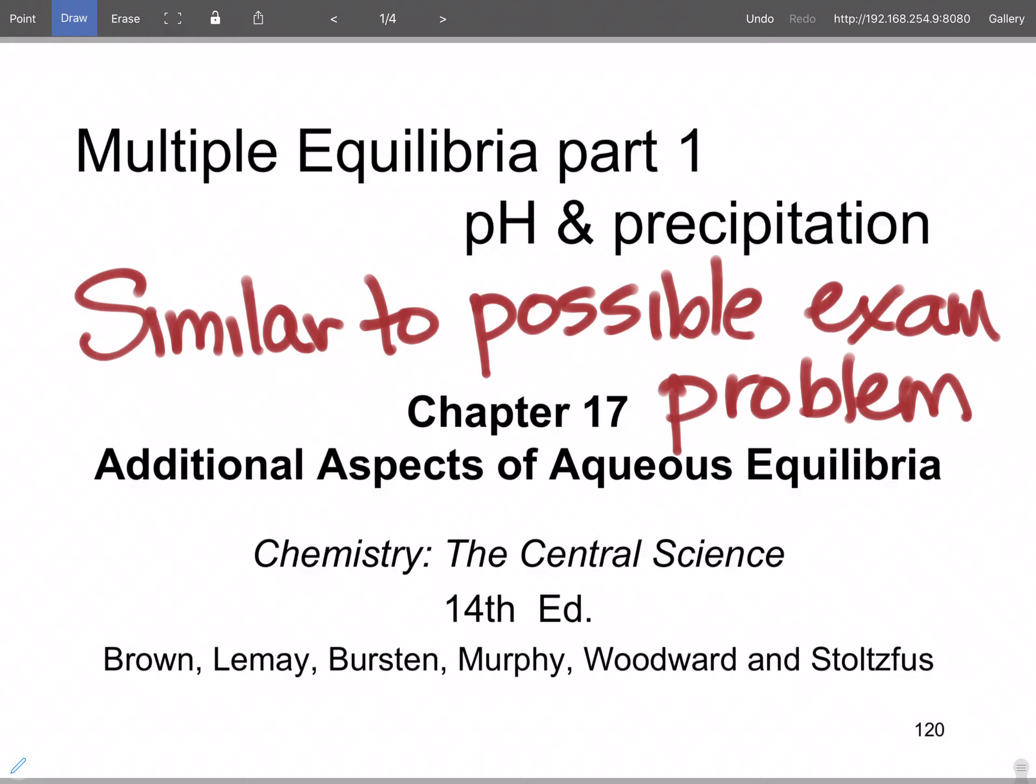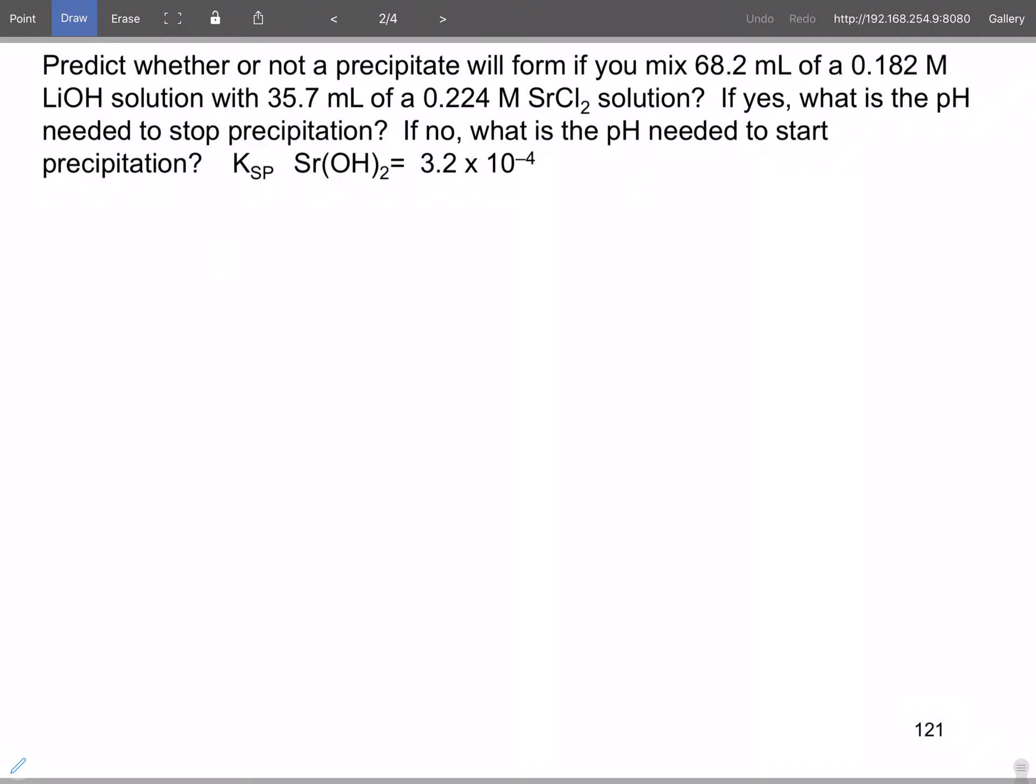Problem that we're going to work in this chapter, and this is the multiple equilibria with the pH. This is similar to what will appear on the exam. Predict whether or not a precipitate will form if you mix lithium hydroxide with strontium chloride. If yes, what does the pH need to stop precipitation? If no, what does the pH need to start precipitation?